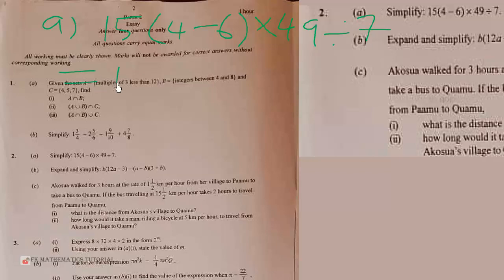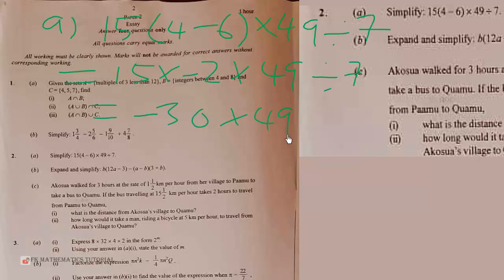We solve the bracket first: 4 minus 6 is negative 2, and 49 divided by 7. So we have 15 times negative 2, which is negative 30, times 49. Now we change the division to multiplication and reciprocate, so 49 divided by 7 becomes multiplied by 1 over 7. Seven goes into 49 seven times, leaving us with negative 30 times 7.